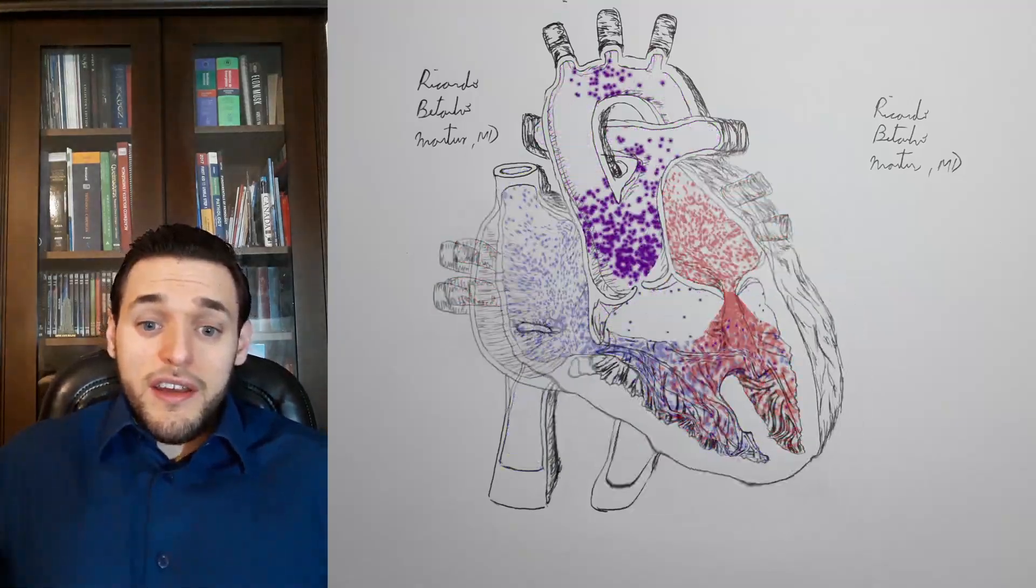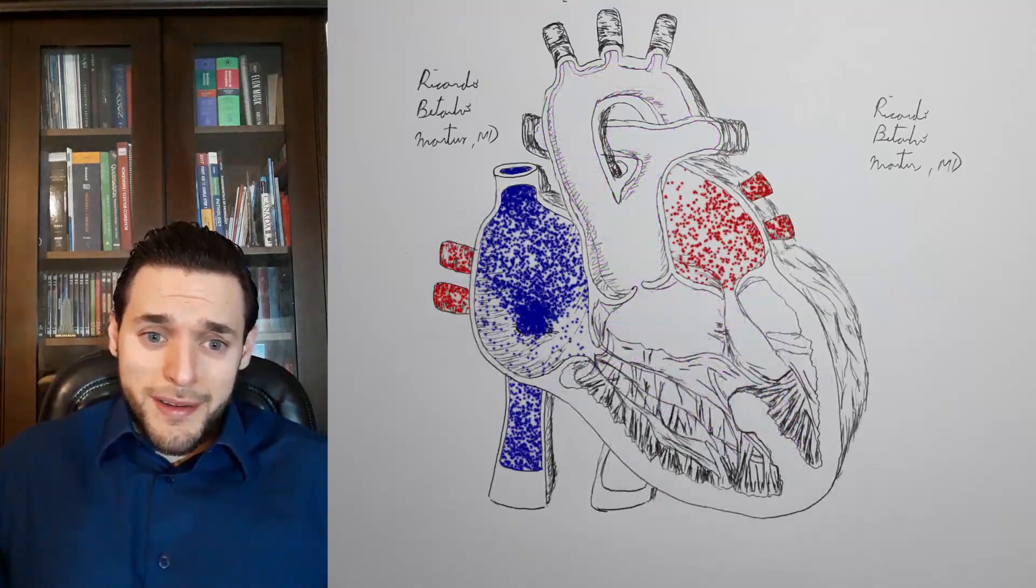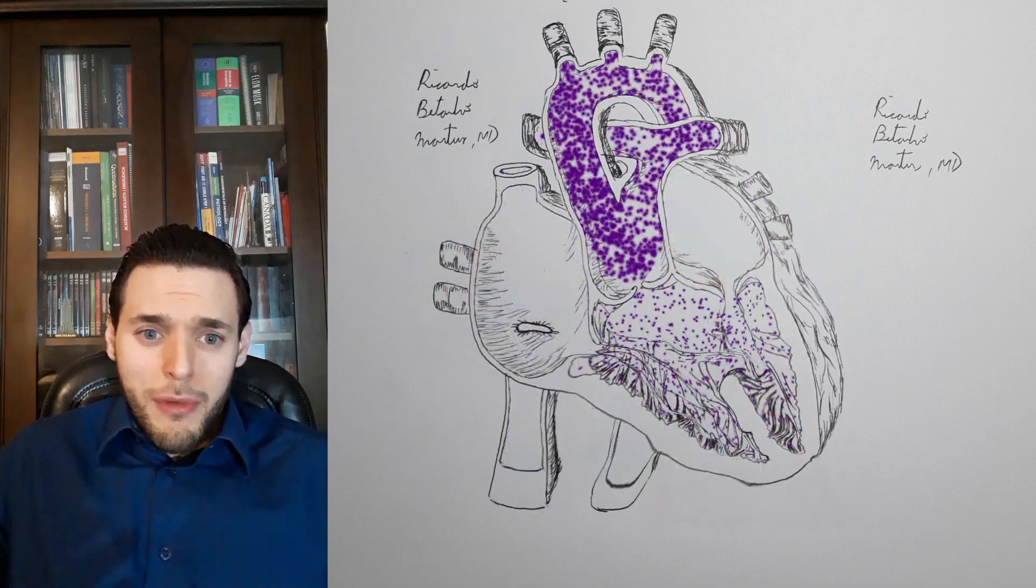Persistent truncus arteriosus is a cyanotic congenital heart disease, or a cardiac malformation.